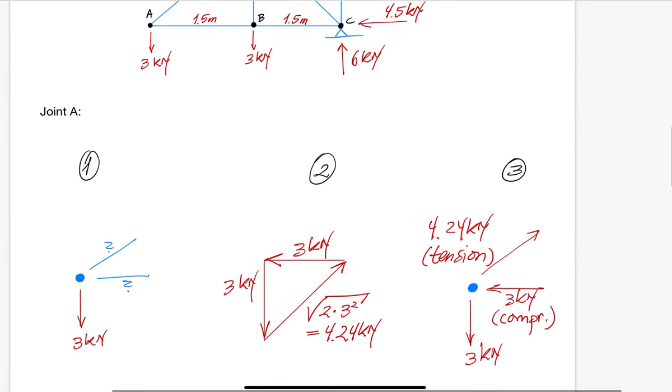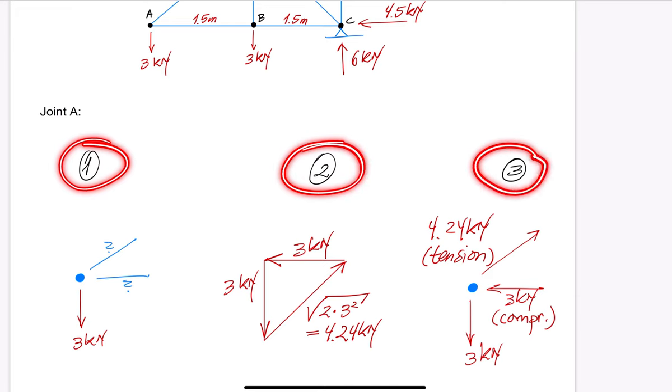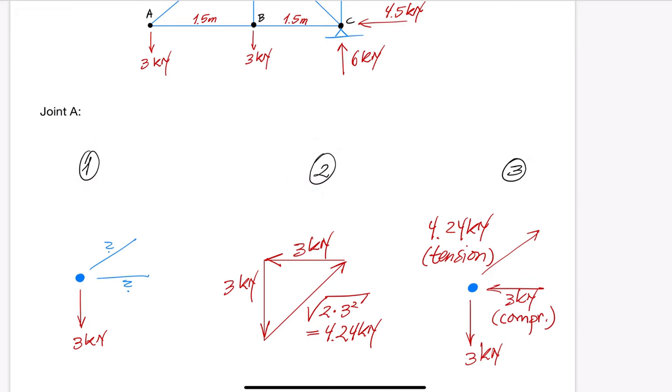Again, we use the graphical approach, which involves closed force polygons, which follows these three steps at each joint. First, draw all force directions on the joint, even those that are unknown. Second, put the known forces down on paper and play around with the direction of the unknown forces in order to close the force polygon.